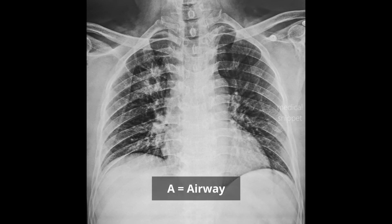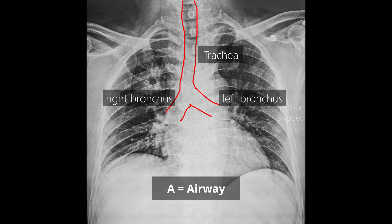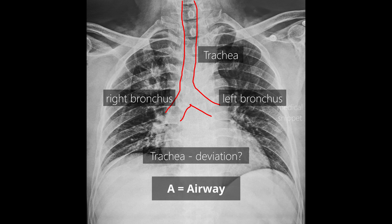A stands for the airway. Airway includes tracheal and bronchial air shadows. One has to look whether the trachea is in the midline or not, whether there is any tracheal deviation. If there is tracheal deviation, one should assess whether it is pulled or pushed away from the lesion.